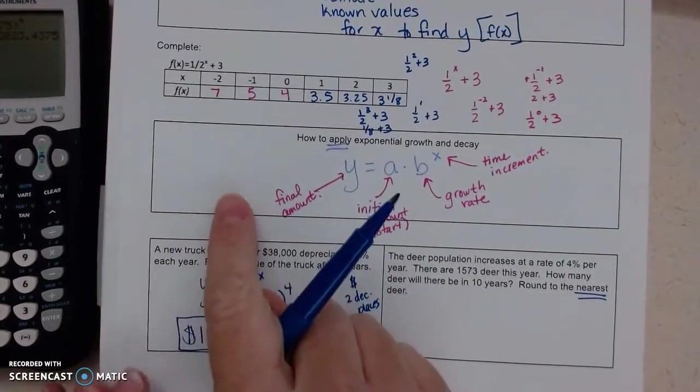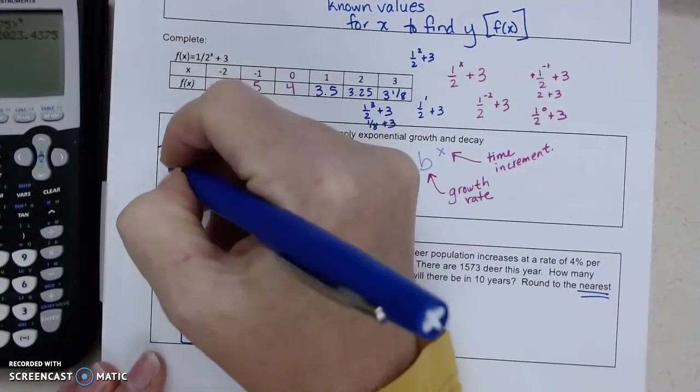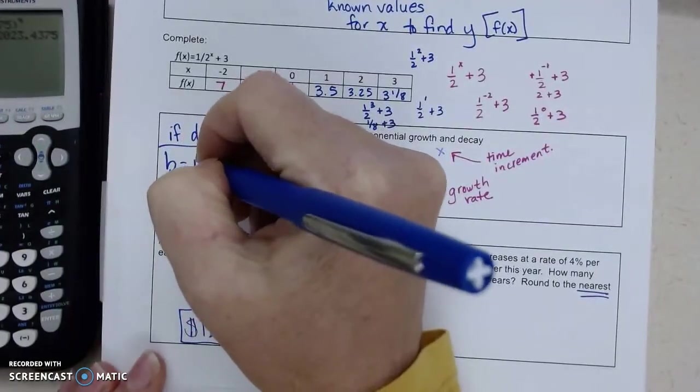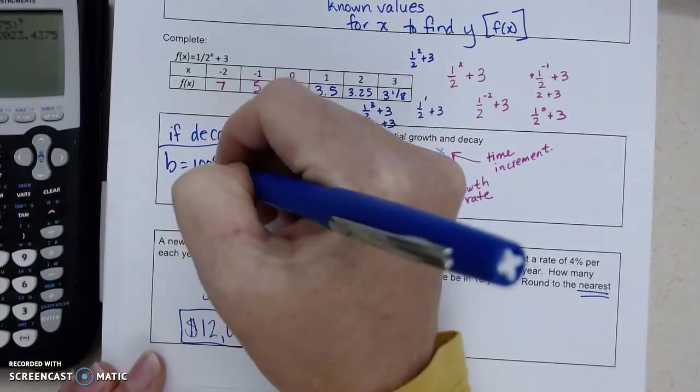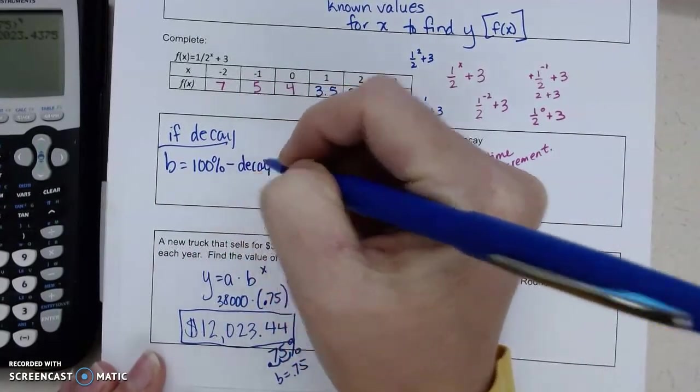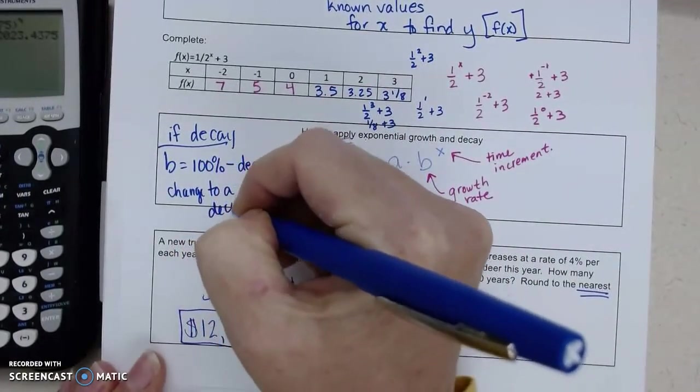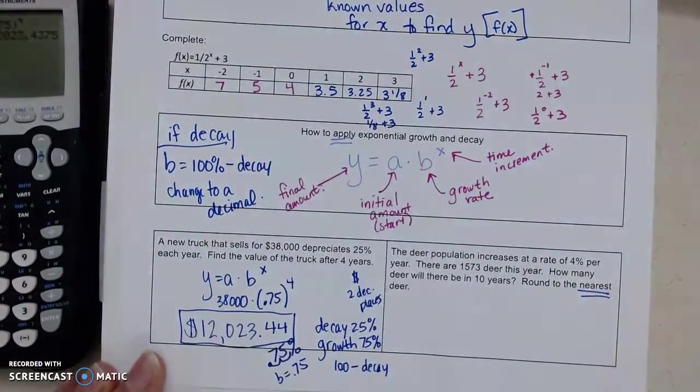So let's go ahead and add to our notes. If we have decay, we're going to take our base number is 100 minus the decay amount. And then we're going to change to a decimal.